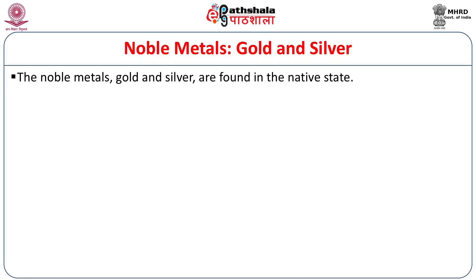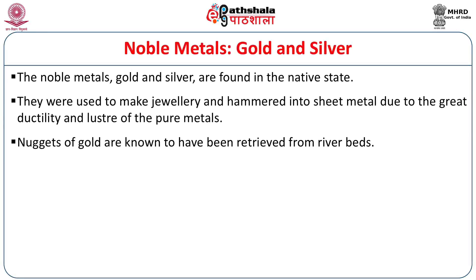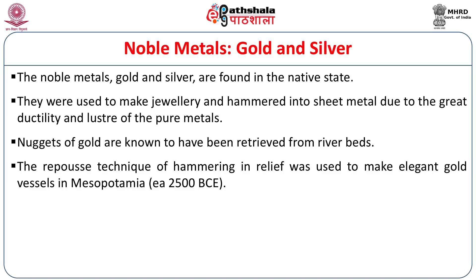We will first start with the noble metals of gold and silver. Gold and silver, being noble metals, are found in the native state. Since they were rather soft, ductile, and had a bright lustrous appearance, they were used to make jewelry and also hammered into sheet metal due to their great ductility. Gold was found in the alluvial form as nuggets from streams where hard rock gold was washed down, and these nuggets were retrieved from river beds. The Repoussé technique of hammering and relief was used to make elegant gold vessels going back to Mesopotamia in 2500 BCE.